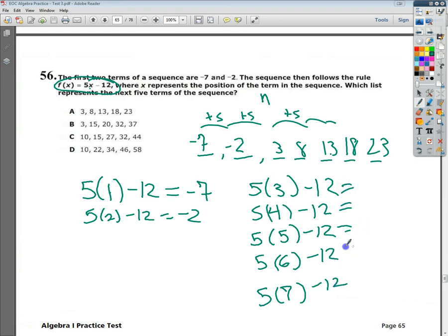And then it'll just give you the exact values. So, 5 times 3 is 15, minus 12 gives you 3. 20 minus 12 is 8. 25 minus 12 is 13. 30 minus 12 is 18. And 35 minus 12 is 23.